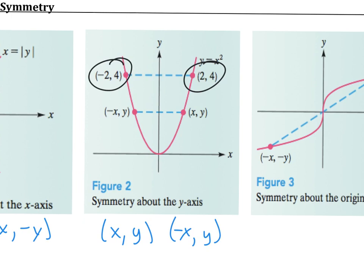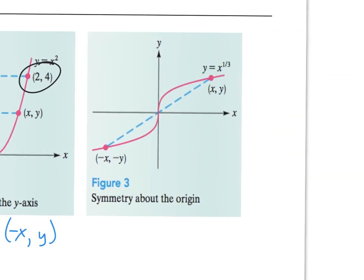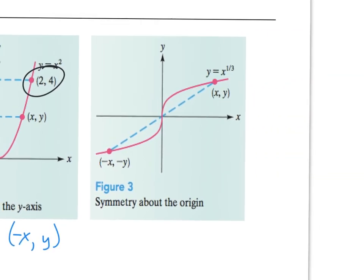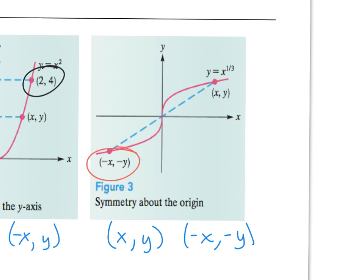The last type of symmetry is symmetry about the origin. As you can see, every point (x, y) has an exact opposite (-x, -y). You'll see that in the two points presented on the graph.